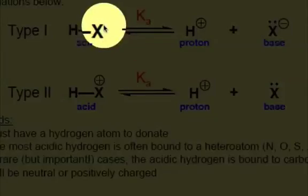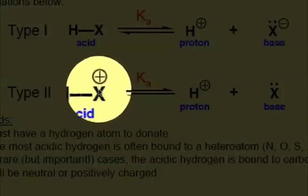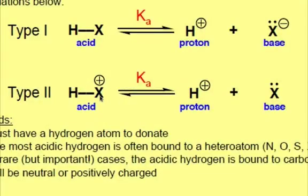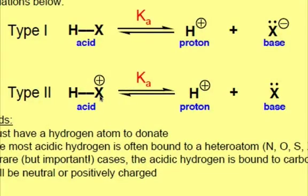This proton could be on a neutral atom, or it could be on a positively charged atom like we see in type 2. These are the two types of acids you can have.